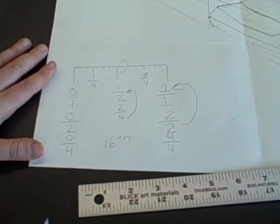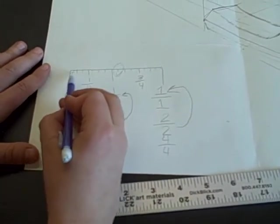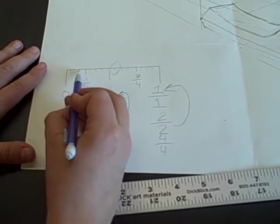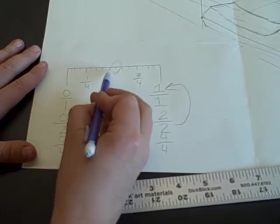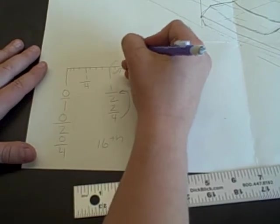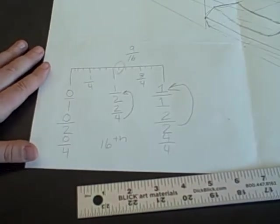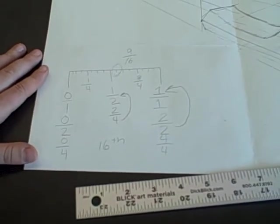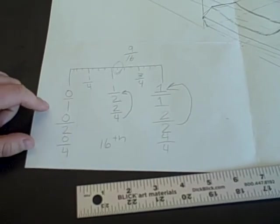If I asked you to tell me what this measurement was, the simplest way to do it is to count the lines: 1, 2, 3, 4, 5, 6, 7, 8, 9. This is the ninth line out of 16, and then if I would like to say it in the simplest form, then I need to find that math.